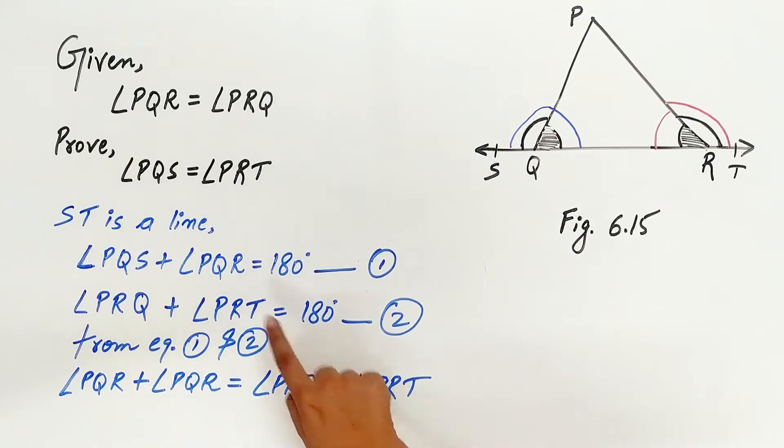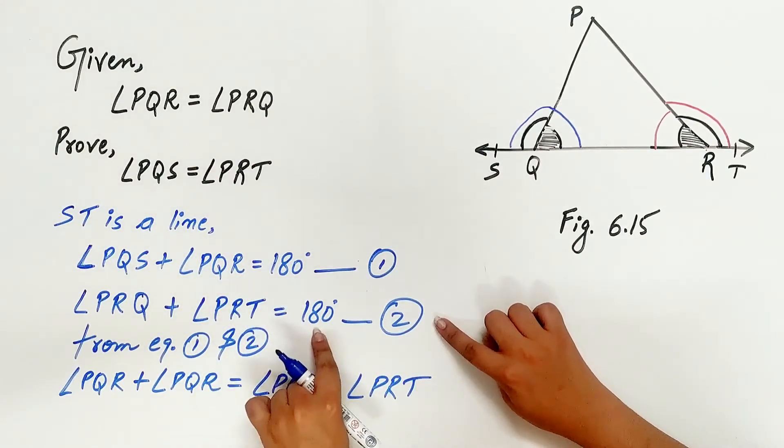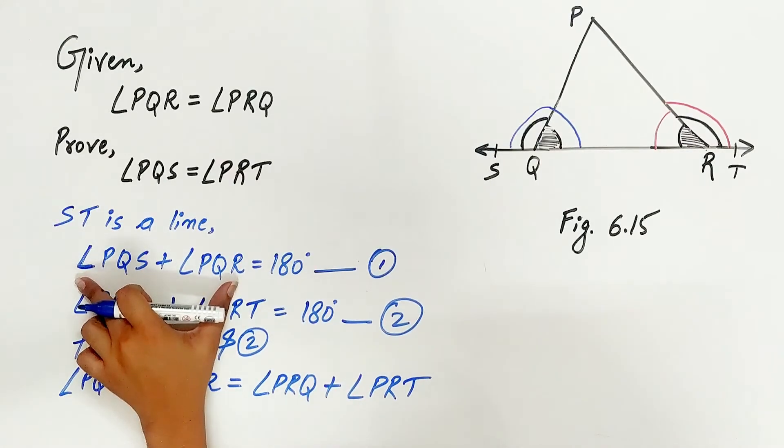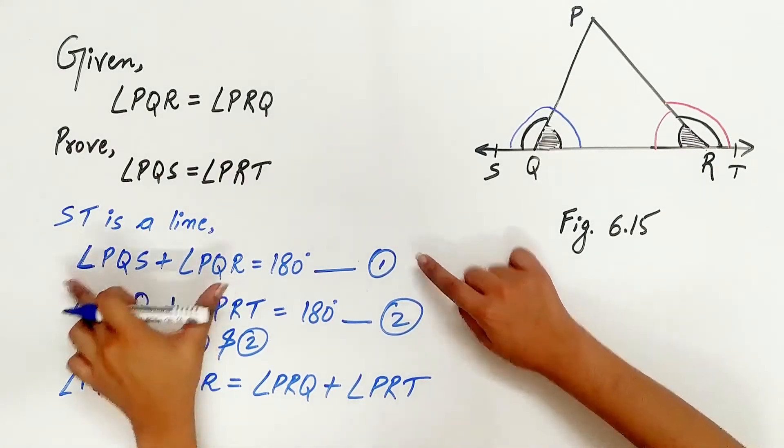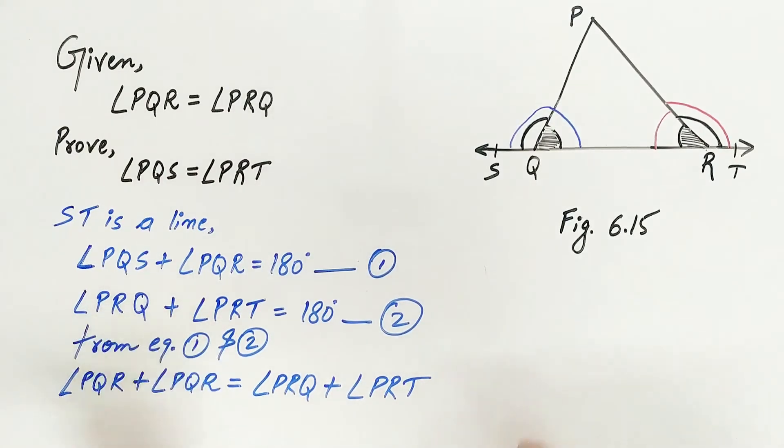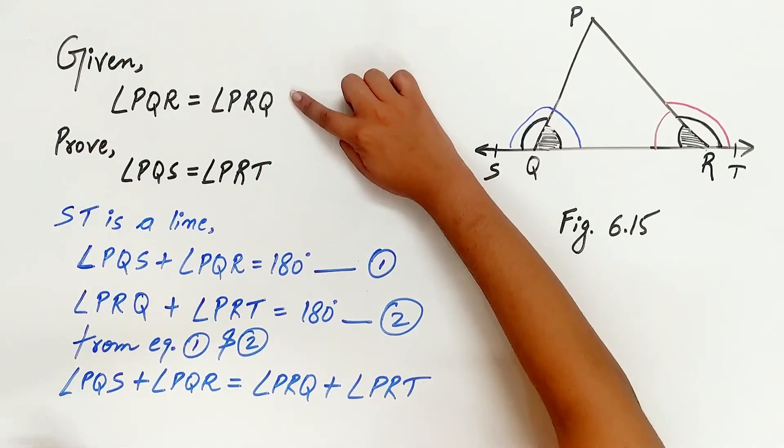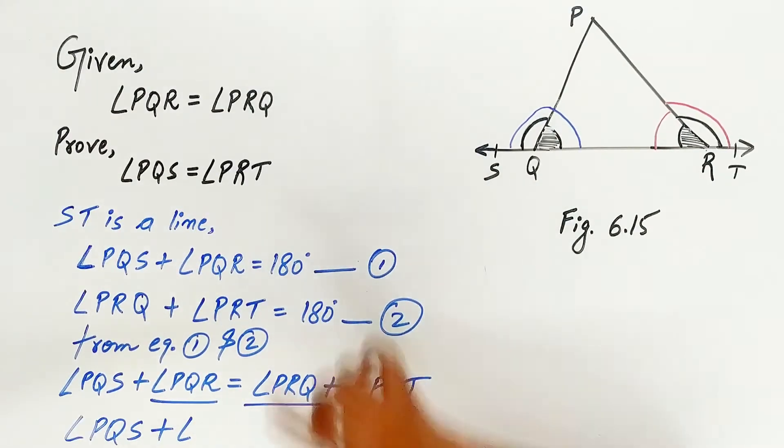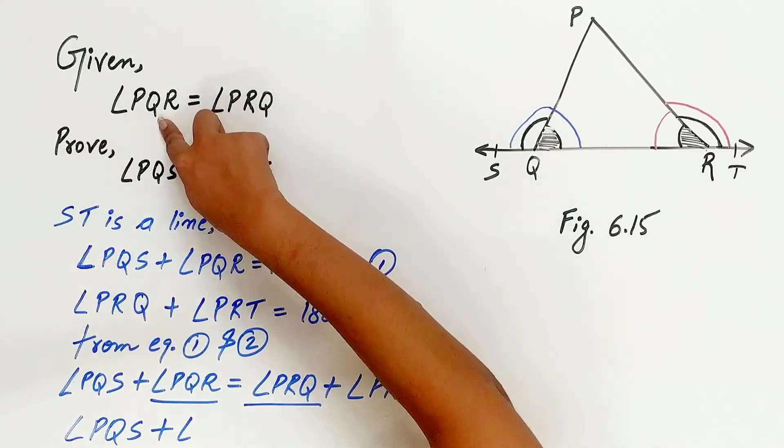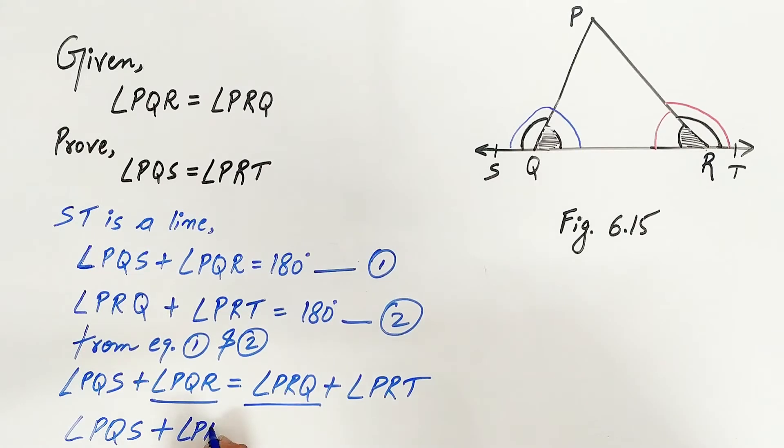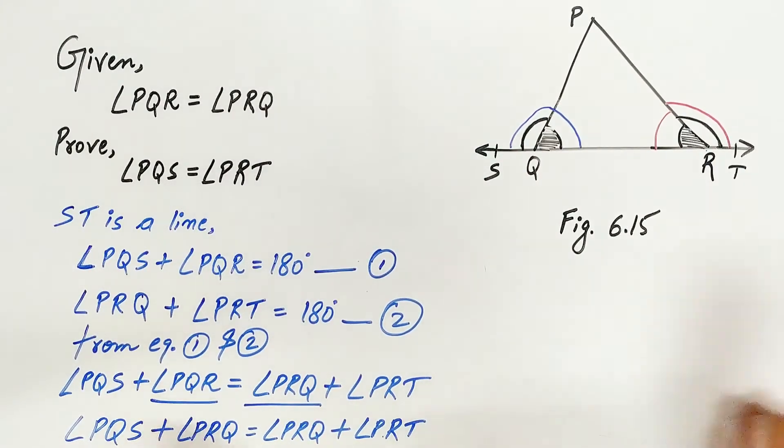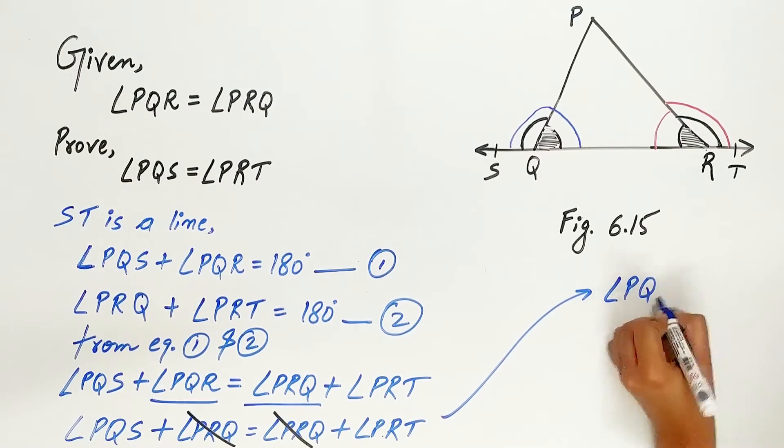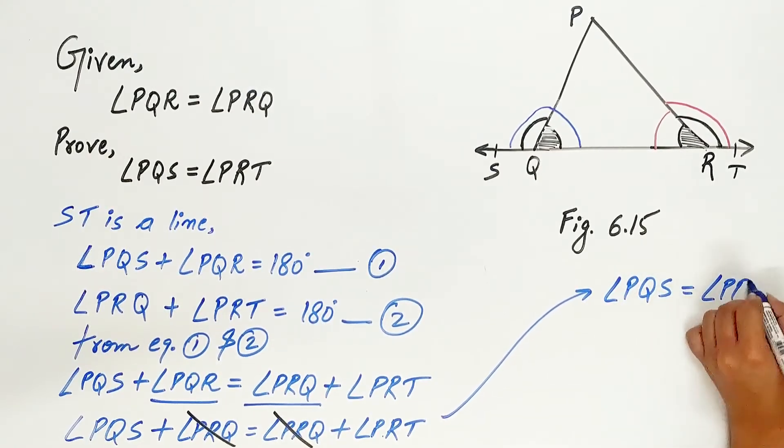Since the right-hand side of both equations is the same, hence LHS of equation 1 is equal to LHS of equation 2. Now we know angle PQR is equal to angle PRQ. So can I write angle PRQ instead of angle PQR? So I can cancel them. Remaining is angle PQS is equal to angle PRT.